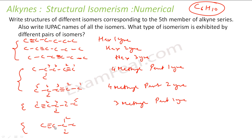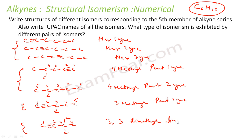Continuing the naming: with a 4-carbon main chain numbered 1, 2, 3, 4 and two methyl groups at position 3, the triple bond at position 1 gives 3,3-dimethylbut-1-yne. If you have difficulty understanding this naming convention, please watch the previous chapter video on organic chemistry where we explain how to name organic compounds.